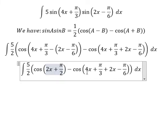4x plus 2x, we have 6x. π over 3 minus π over 6, we have π over 6.